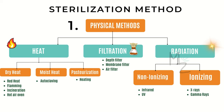In dry heat, methods include flaming, incineration, and hot air oven. Filtration is the preferred method of sterilizing heat-sensitive solutions. Solutions are filtered to make them pyrogen-free prior to autoclaving. The most commonly used filter is composed of nitrocellulose and has a pore size of 0.22 µm, which retains all bacteria and spores. Filters work by physically trapping particles larger than the pore size.